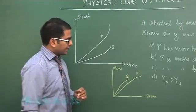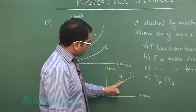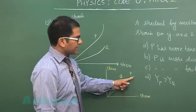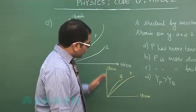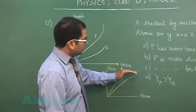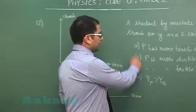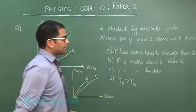Now you could see that out of P and Q quite obviously P will be having more tensile strength than Q reason. The value of stress on P is higher as compared to Q without breaking so quite obviously P will be having more tensile strength.